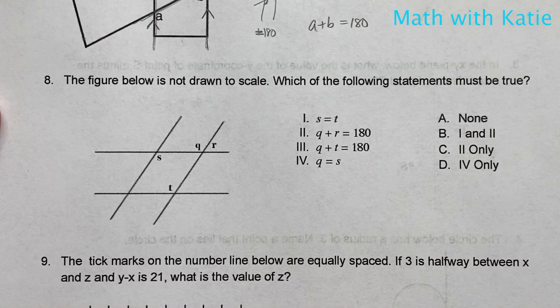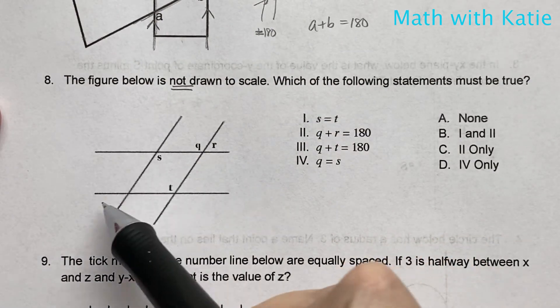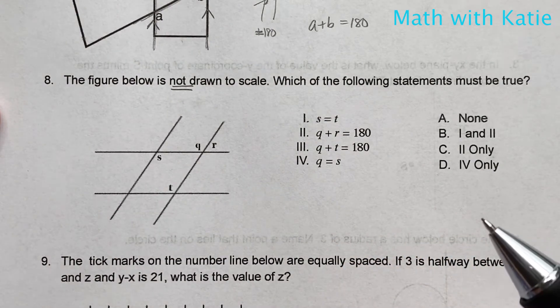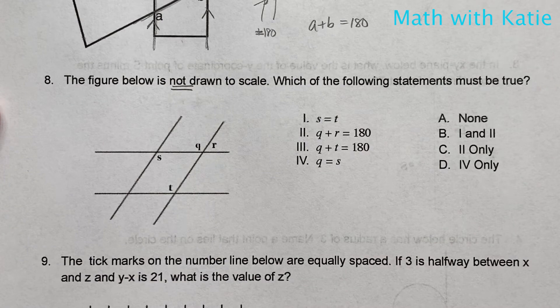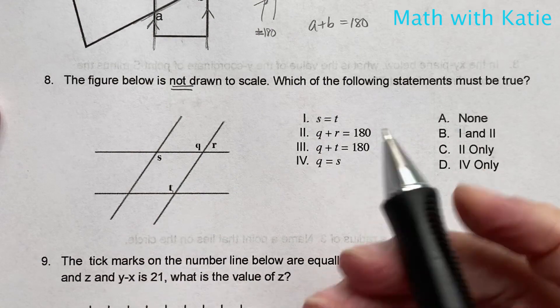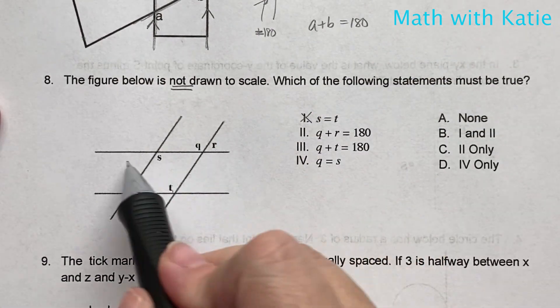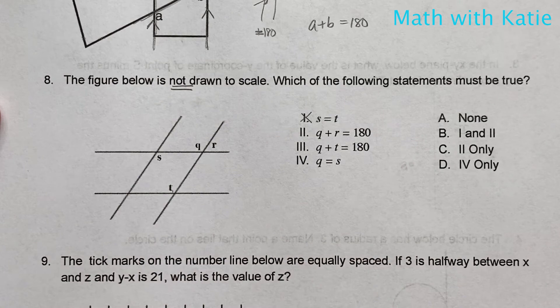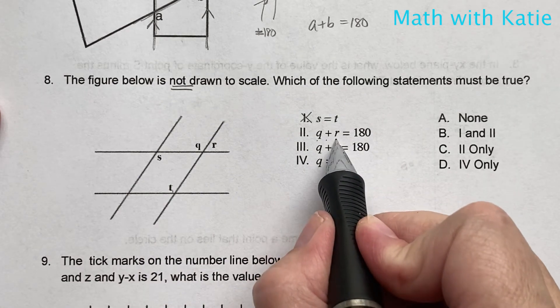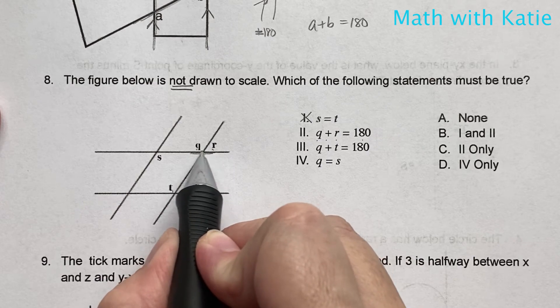The figure below is not drawn to scale. So even though these lines look parallel, we can't assume that they are. Which of the following statements must be true? S is equal to t? No, we cannot state that because we don't know if these four lines are parallel to each other. Q plus r equals 180. We do know that because they are a linear pair.